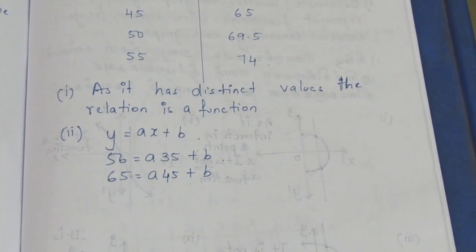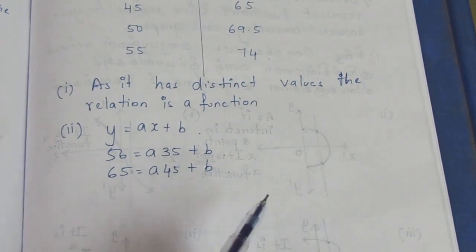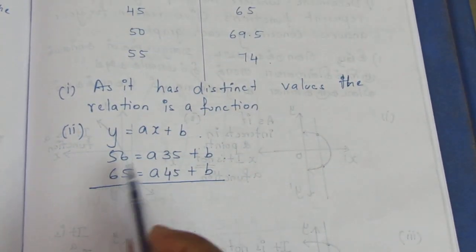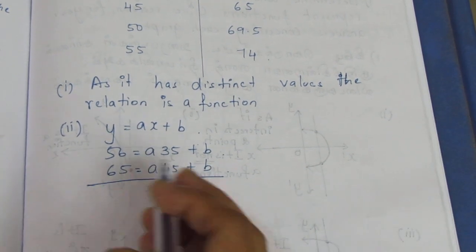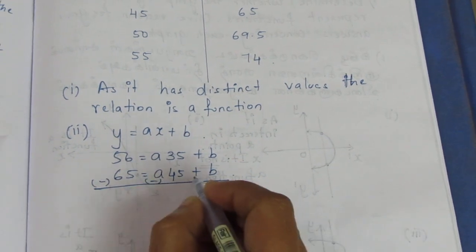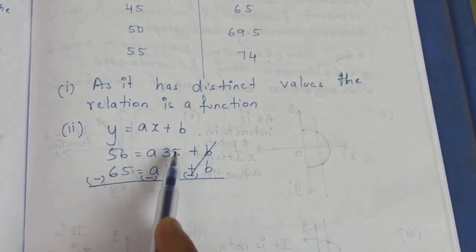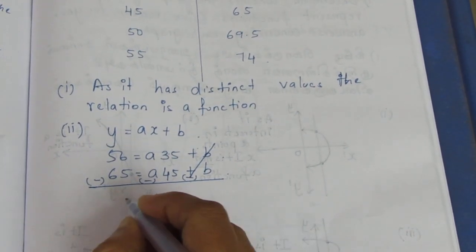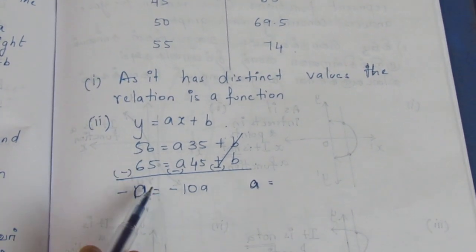We can do elimination. If you write the two equations, you can perform elimination. Subtracting the first equation from the second: 65 minus 56 equals 9. The x terms give 45 minus 35 equals 10, so we get 9 equals 10a, which means the coefficient difference equals 9.